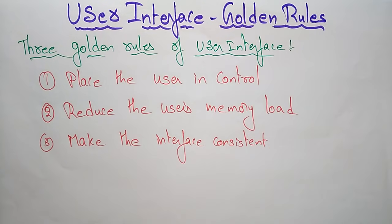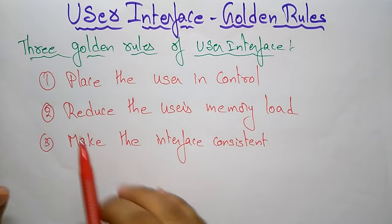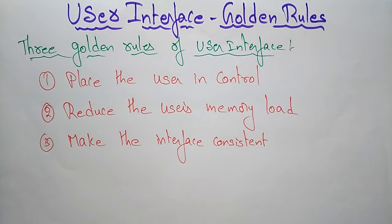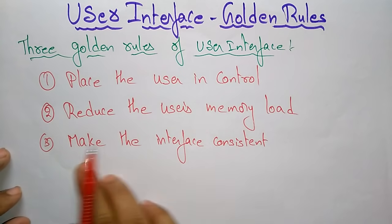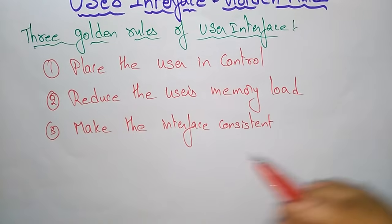These are the three main golden rules that we have to follow in the case of user interface. The user interface has to place the user in control first. Whatever app or product we are designing, we have to reduce the memory load on users and make the interface consistent.